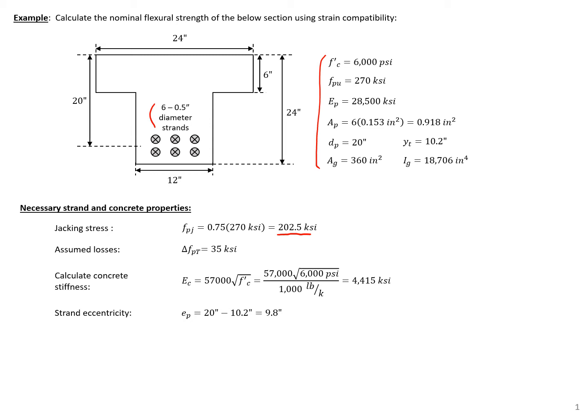We're going to assume total pre-stress losses here of 35 KSI. If you're using the strain compatibility approach to calculate your flexural strength, typically you check your strength after you check your stresses, so you would have already calculated your pre-stress losses at this point.